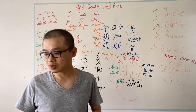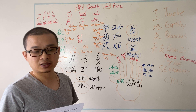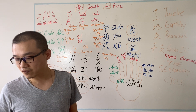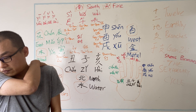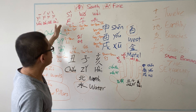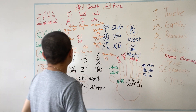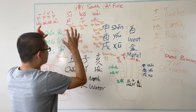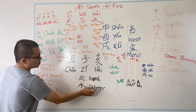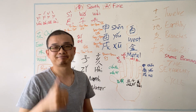In the next video I'm going to show you what we call Fang Wei and the Five Elements — the relationships between the twelve Shi Chen, the twelve Earthly Branches, their directions, and the Five Elements.